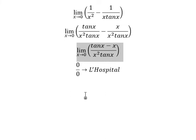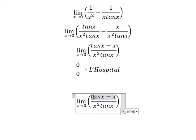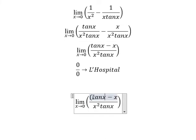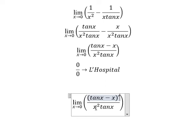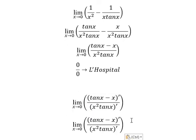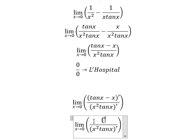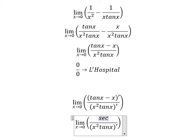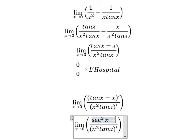That means we need to do first derivative of our numerator and denominator. First derivative of tan x we have secant of x square. First derivative of x we have number one.